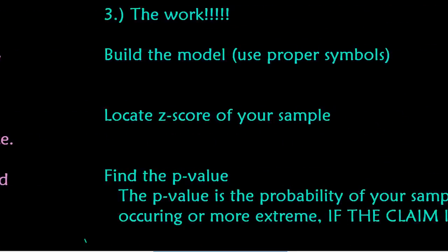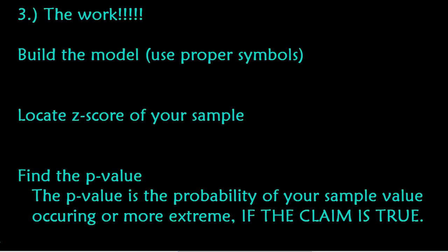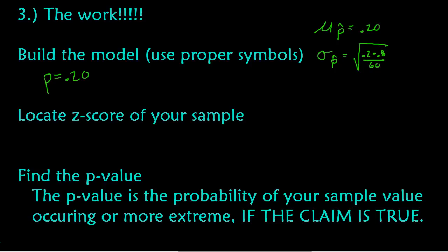Now for the actual math work — my favorite part. Step three is a three-step process. First, I build the model by assuming the truth is 20%. The mean of the sampling distribution is 0.20. The standard deviation is calculated as the square root of (0.2 × 0.8) divided by the sample size of 60. Calculating that gives 0.0516.